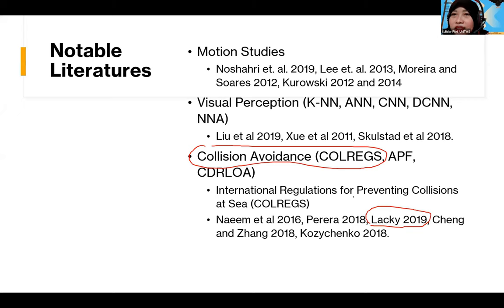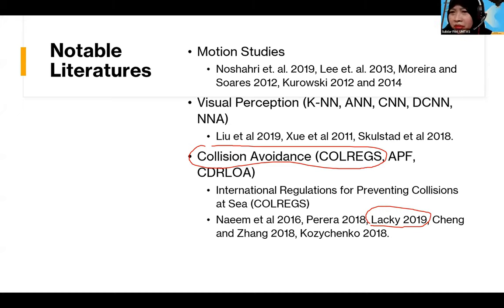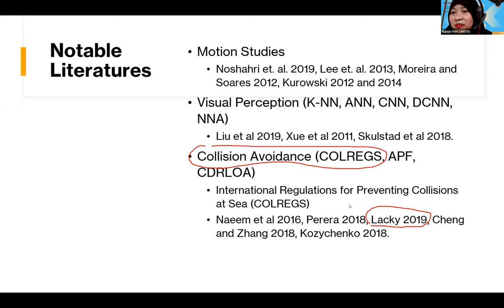Looking at the chat box, there is a question from Fikri Firmansyah from Mechanical Engineering. His question: he is working on water quality monitoring in Lake Ciberem, Tasikmalaya. He has made a robot that moves on the water surface, but the balance of the robot is unstable. Can you give your opinion on this matter? Professor, can you give some suggestions?